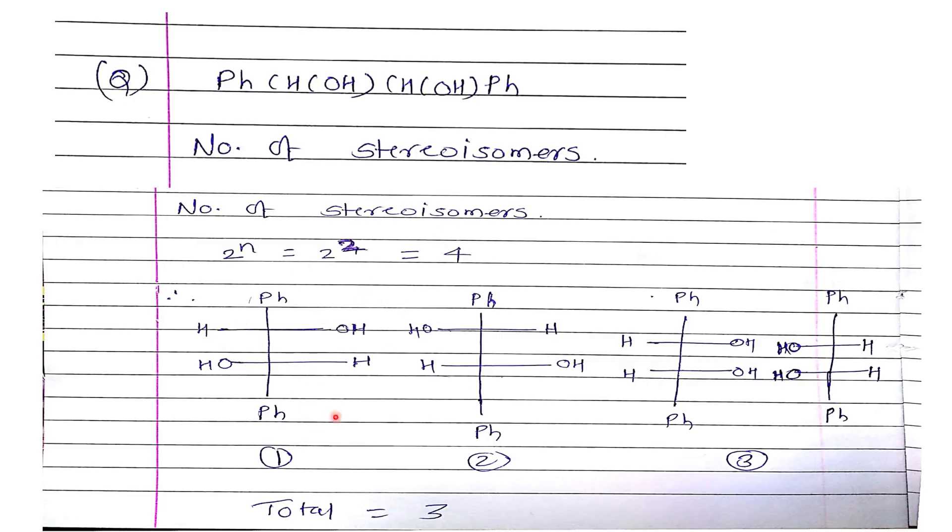If you draw the structure of these two with R and S configurations, these are mirror images. Then moving on to the third and fourth one.